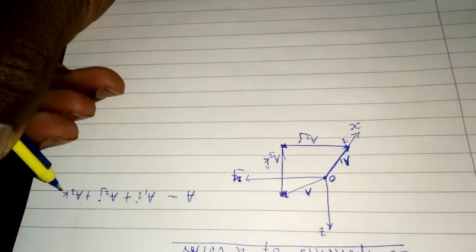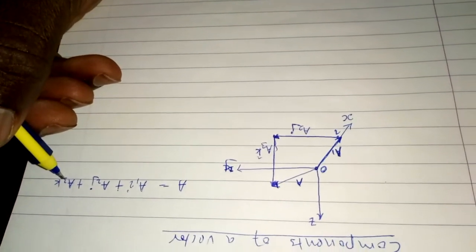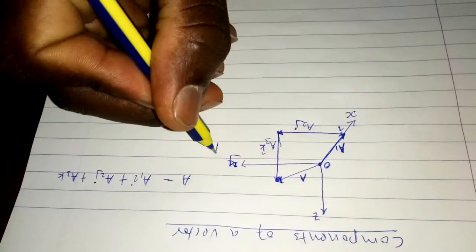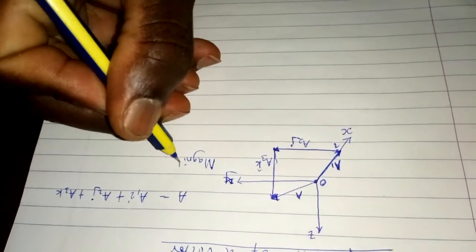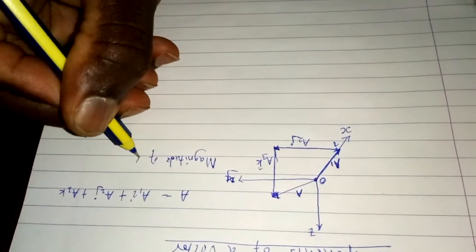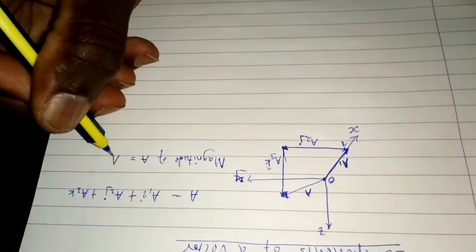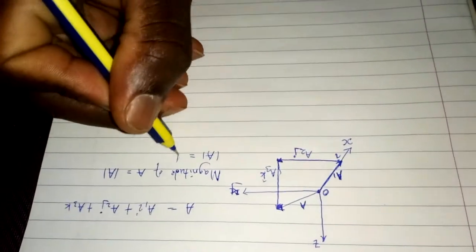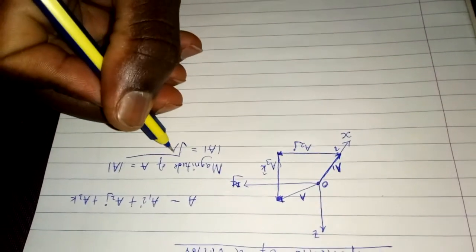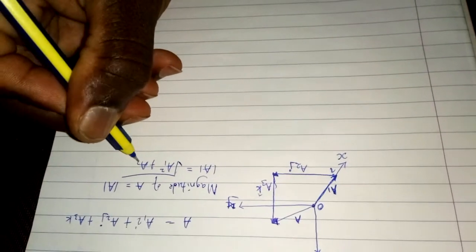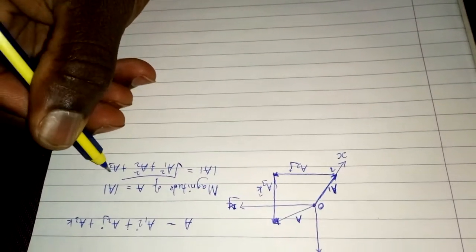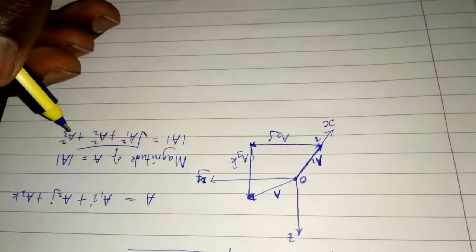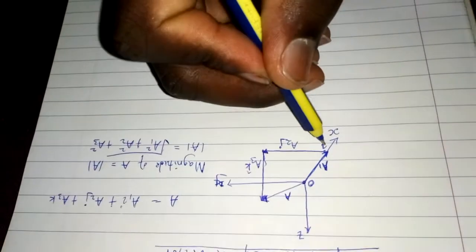The magnitude of vector a is given as |a|, which is the square root of a1 squared plus a2 squared plus a3 squared.